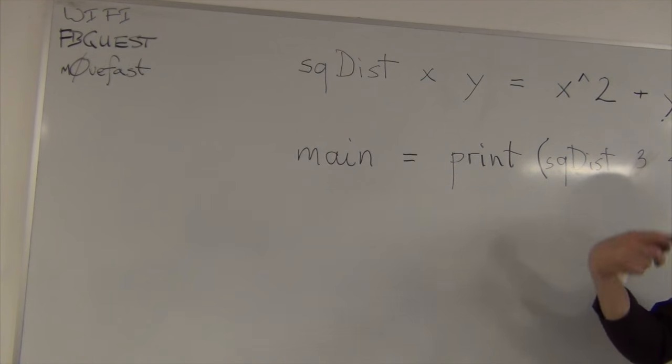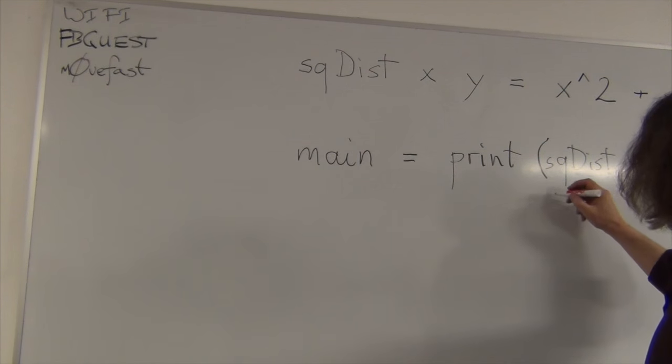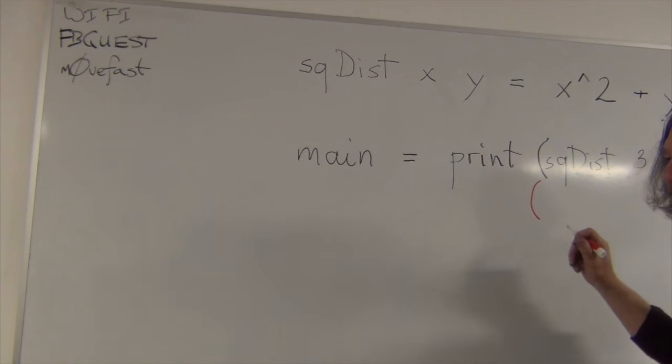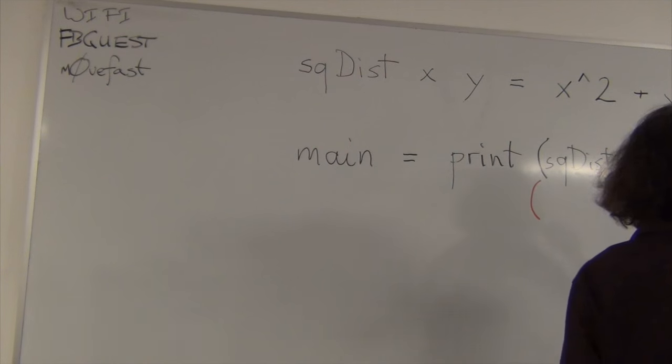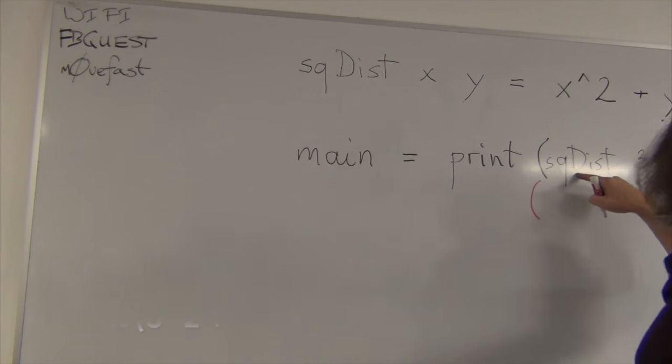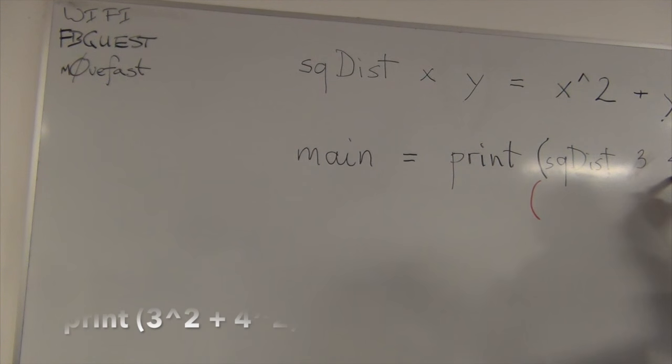So, I can replace sq dist 3, 4 with this thing where I replace x and y with 3 and 4. Right? So, that's, that's the, what is it called? Beta conversion? Some kind of, they call these conversions using Greek letters and they just don't. What would mean? Maybe it's data. Data. Data. Data conversion. Sorry. Beta conversion when you rename a variable. Substitution. Yeah. Okay. So, instead of sq dist 3, 4,